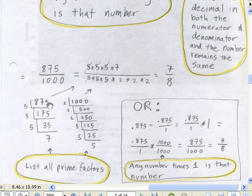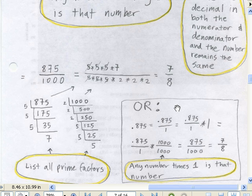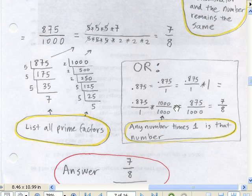And then we're left with 875 divided by 1,000. We break that apart into prime factors: 5, 5, 5, 5, 5, 5, 7. And 1,000 is 2, 2, 2, 2, 2, 5, 5, 5. We cancel what we can, and we're left with 7 divided by 8. So 7/8ths. The answer is 7/8ths. So that's how to go from a decimal to a fraction and reduce.